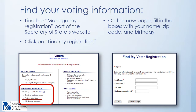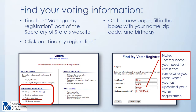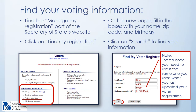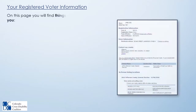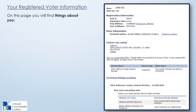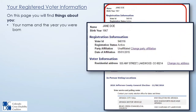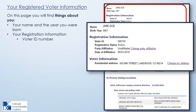Click on Find My Registration. On the new page, fill in the boxes with your name, zip code, and birth date. Note: the zip code you need to use is the same one you used when you last updated your voter registration. Click on Search to find your information. On the results page, you will find your name and the year you were born, your registration information, and your voter ID number and registration status.